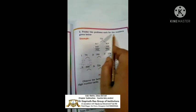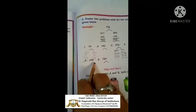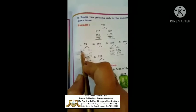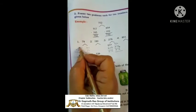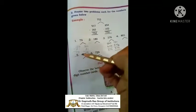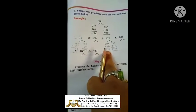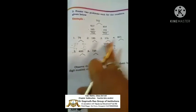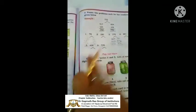Frame two problems each for the numbers given below. Same as we have done in addition: we got 490 and they have given examples in this way. See, 79 is given — I've solved for you: 110 minus 31 equals 79. 10 minus 1 is 9 and this becomes 10, 10 minus 3 is 7. Also 100 minus 21 is again 79. For 376: 800 minus 424 is 376. It is not necessary that you frame this exact question — you can give different numbers also.